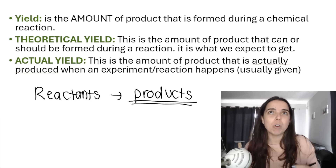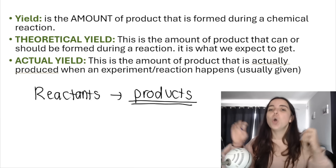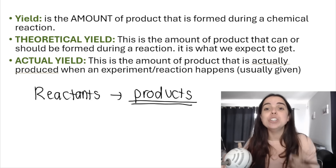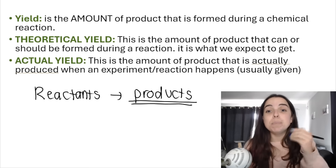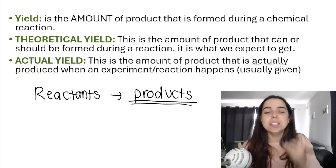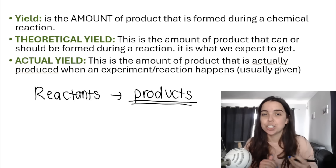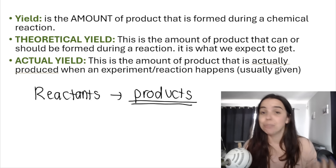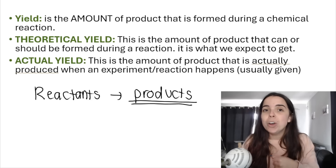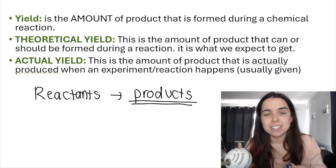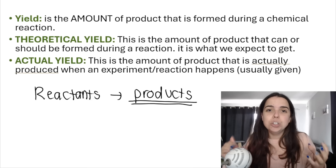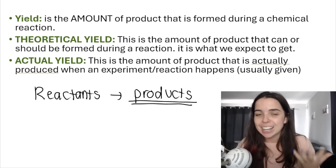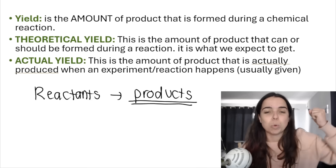Theoretical yield. What this means is, in theory, what we should produce — it's the amount of product that we can get or should get during a reaction. It is what is expected, depending on the stoichiometry or the calculations that we do. For example, you write a mass test and your test is out of 50. Theoretically, if you know your work, if you listened to your teacher, if you practiced and studied, in theory you can get 50 out of 50. So your theoretical yield is 50 — it's what you should get, what we expect to get, what we reach for.